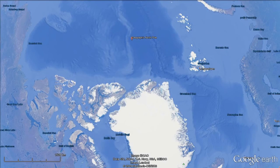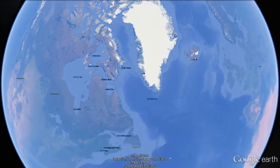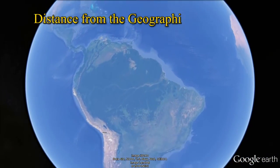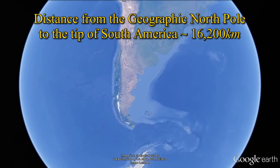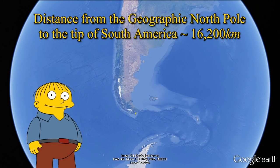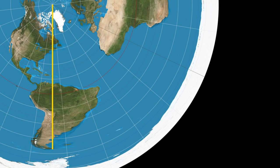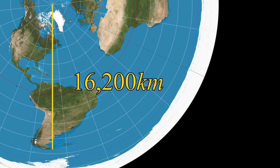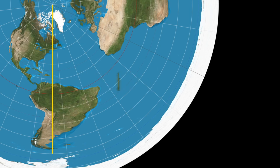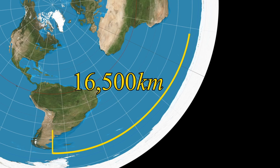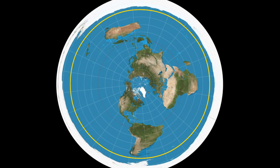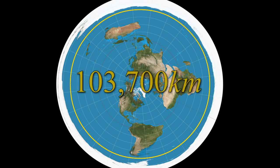Let's get a ballpark figure on how many patrol boats they would need. The straight-line distance from the North Pole to the tip of South America is about 16,200 kilometres. Since Flat Earthers claim that distances on land are the same on their magic disc world as they are in reality, it's going to be 16,200 kilometres for them too. Let's have our patrols passing roughly halfway between Tierra del Fuego and the Krakow Peninsula, say 16,500 kilometres from the North Pole. This gives a circumference of roughly 103,700 kilometres of ocean to patrol continuously.